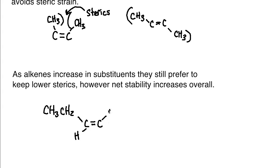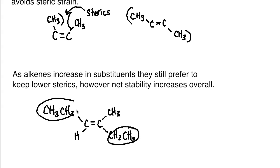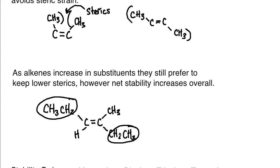We want to keep the larger groups further away from one another. But what is meant by net stability increasing overall is that as we replace hydrogens with alkyl substituents, even though this gets bulkier and we potentially have more sterics, that is going to be counteracted by another phenomenon in organic chemistry that we're going to take a look at in a moment.